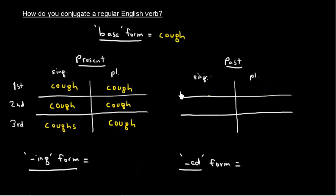Let's do the past. I coughed, you coughed, he she it coughed, we coughed, you plural coughed, they coughed.